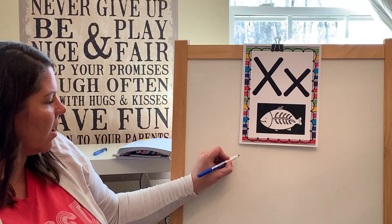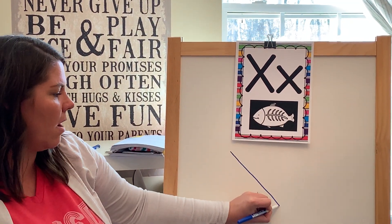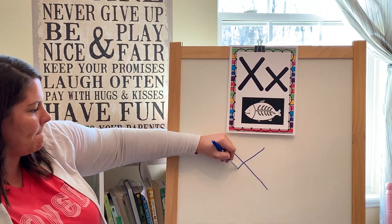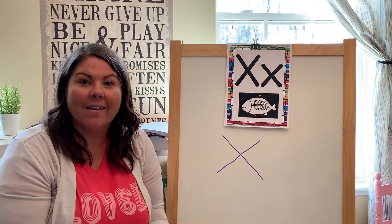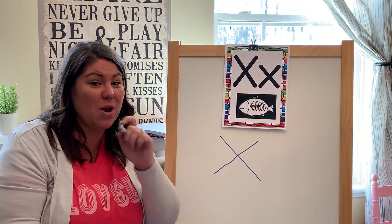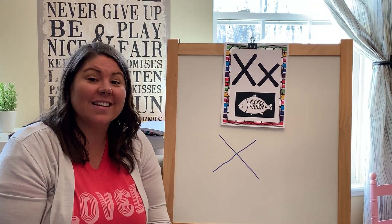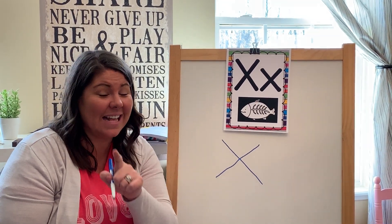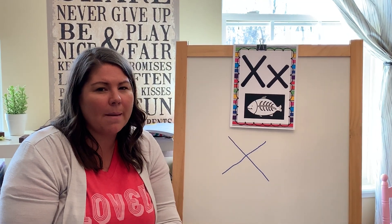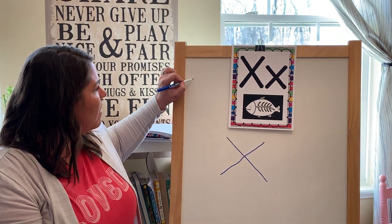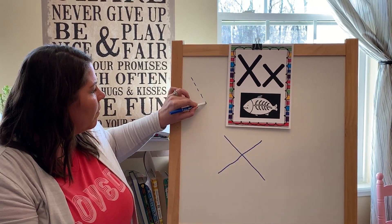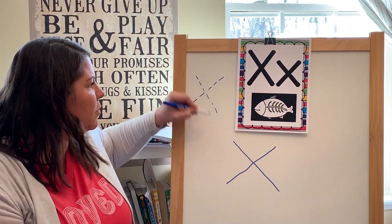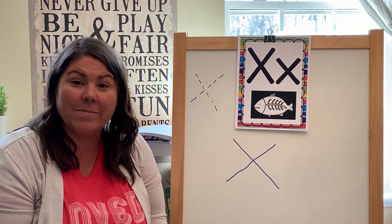We're going to start up here and do a diagonal line down and then stop. Then we're going to come back up here and do a diagonal line backwards and stop. That's pretty easy — it's just two lines. I know you can do it. So practice making X's all over your paper. Moms and dads, if your child is having a tough time making those lines, go ahead and make some dash marks for them, then have your child simply trace over your dash marks to form the letter X.